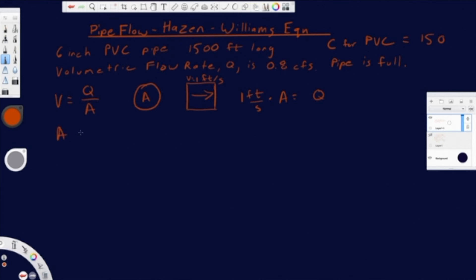In our case, so we have a six inch pipe. Our area, of course, is pi r squared. It's going to be pi times a quarter of a foot squared. And that's going to be 0.196 foot squared. And so our velocity is going to be our 0.8 cubic foot per second divided by the area we just found, 0.196 square feet, 4.08 feet per second.